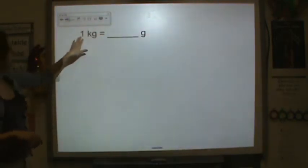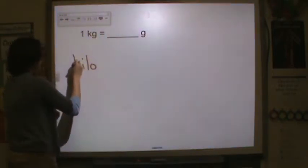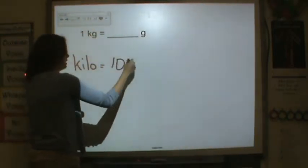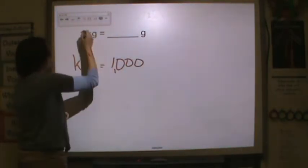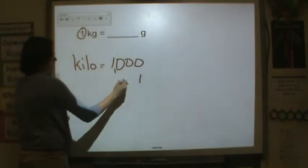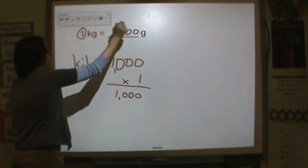So here, one kilogram equals how many grams? We know that the prefix kilo is equal to one thousand. So we're going to take one thousand times one to get one thousand grams.